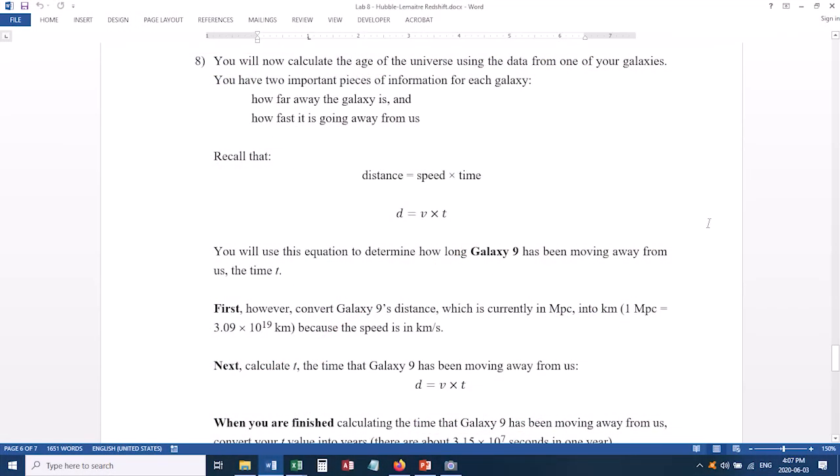The last thing that you're going to be calculating is the age of the universe. So you're going to take the data for one of your galaxies, and you're going to calculate the age of the universe. Specifically, we're going to study galaxy number 9. So you've already got two pieces of information for galaxy 9. You know how far away from us it is, and you know how fast it's traveling away from us. The velocity. So we've already got those two pieces of information, and we can feed them into this equation here, and calculate the time that galaxy 9 has been moving away from us. So we've got the distance, and the velocity, and we solve for the time.